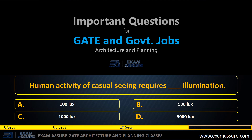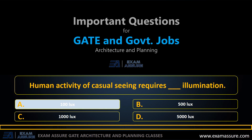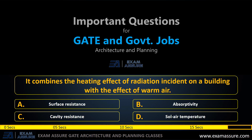Next question: Human activity of casual seeing requires how much illumination? Option A: 100 lux, option B: 500 lux, option C: 1000 lux, option D: 5000 lux. The correct answer is 100 lux.